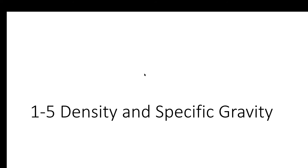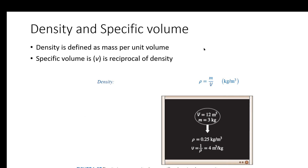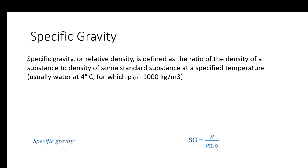Density and specific gravity should be review material — this is covered in Introduction to Engineering. Density is just mass per unit volume. Things with higher density have a higher mass per unit volume. We also have specific volume, which is just the inverse of density. Specific gravity is essentially density relative to the density of water at 4 degrees Celsius. It's a ratio, so there are no units — the units in the numerator and denominator cancel out.